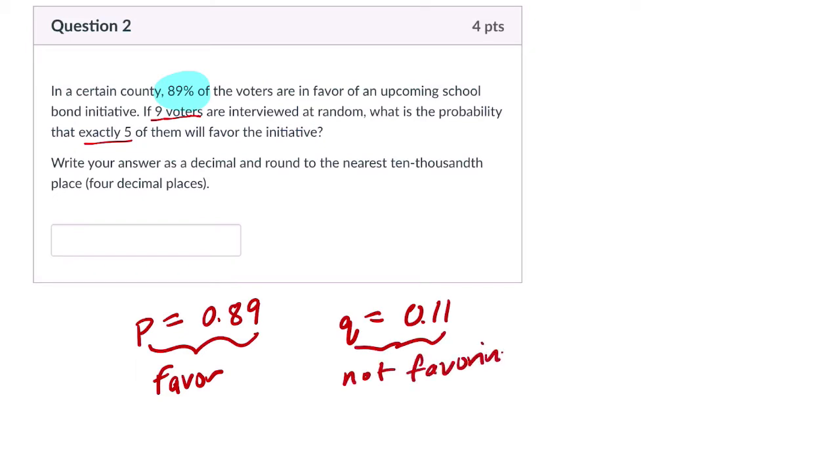And then we're told that nine voters are asked, and exactly five of them favor the initiative. So you can imagine you ask nine people, one, two, three, four, five, they all favor it, and the other four, one, two, three, four out of these nine people, the other four don't favor it.